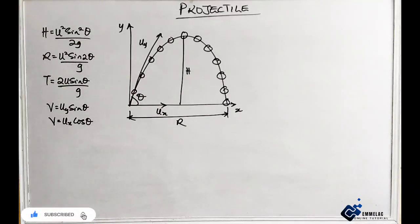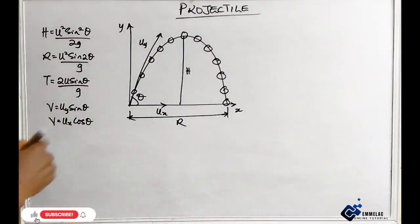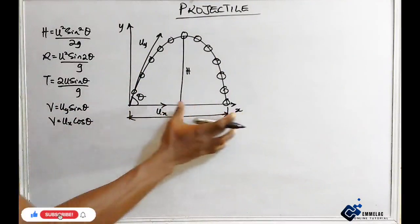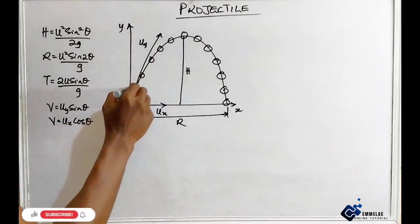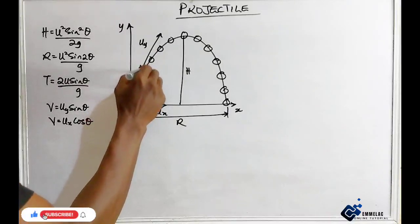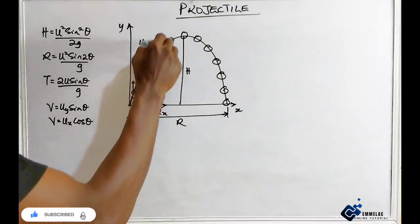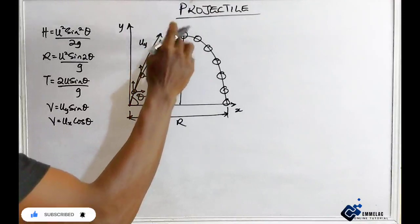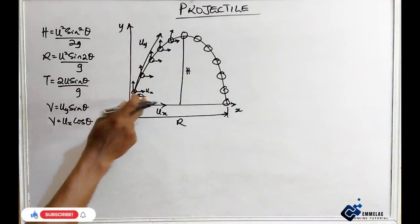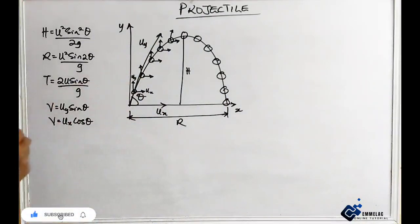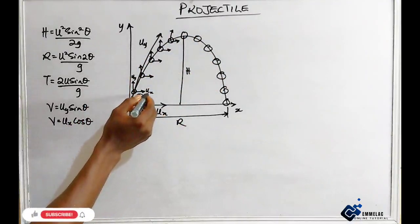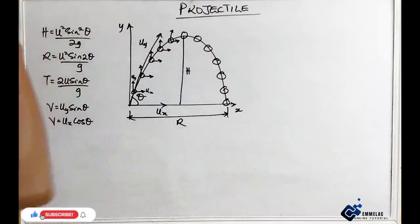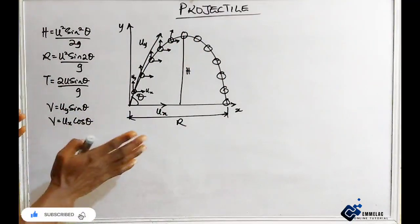Now, when a body is being thrown like this under projectile, we have two components that we need to resolve: first of all, the vertical component and the horizontal component. As this body travels, these are the two components acting on the body. This is the horizontal velocity while this is the vertical velocity. The vertical velocity actually changes with time, while the horizontal component is constant.